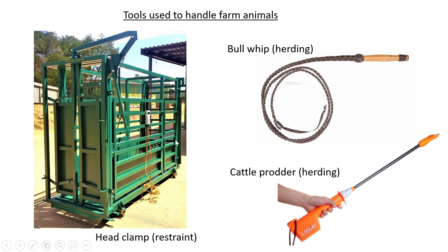On the right-hand side at the top, we have a whip used to herd the animals, mainly cattle. At the bottom, we have a cattle prodder, also important for herding. It causes a mild electric shock, and the best place to use it is on the animal's hindquarters — its behind. This will get the animal moving if it's immune to the whip and doesn't want to listen. Animals cannot ignore the cattle prodder.